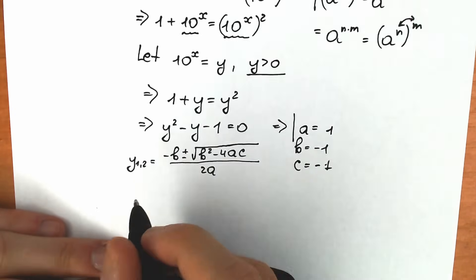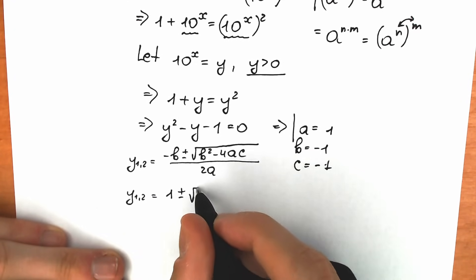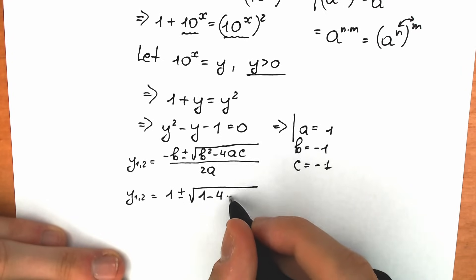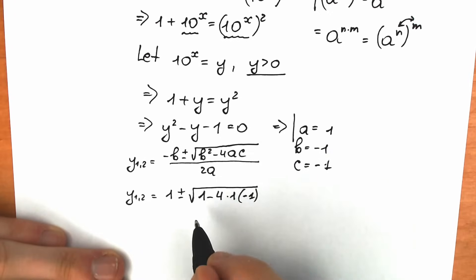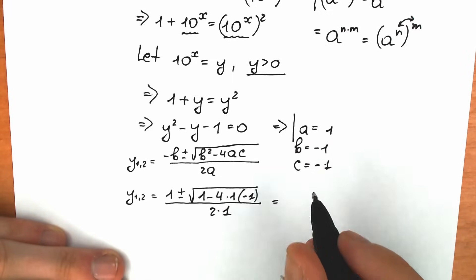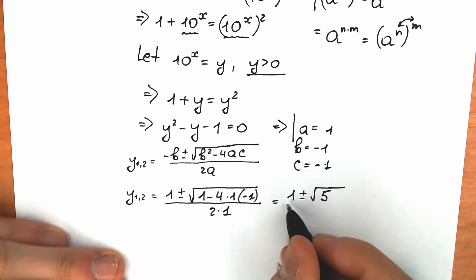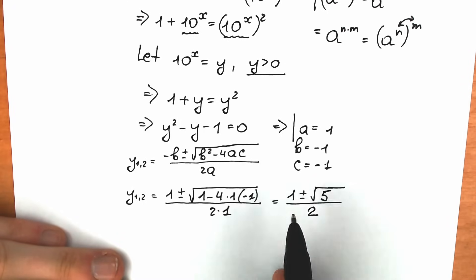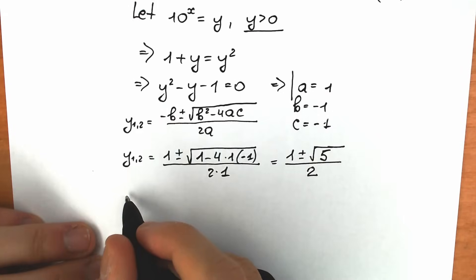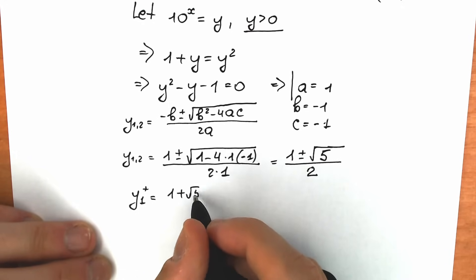Substituting: y₁,₂ = (−(−1) ± √((−1)² − 4·1·(−1))) / (2·1) = (1 ± √(1 + 4)) / 2 = (1 ± √5) / 2. So y₁ = (1 + √5) / 2 and y₂ = (1 − √5) / 2.